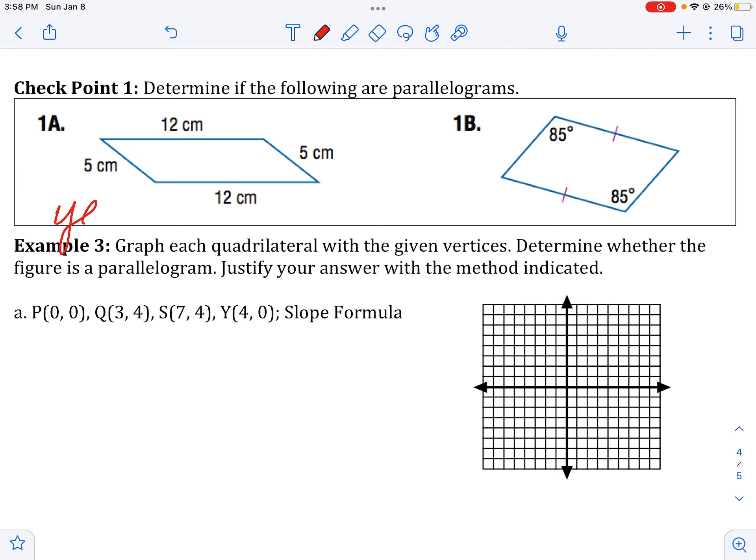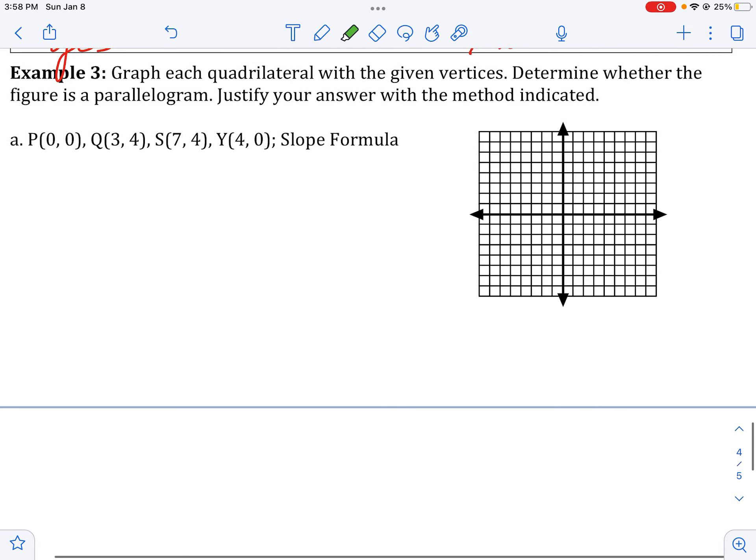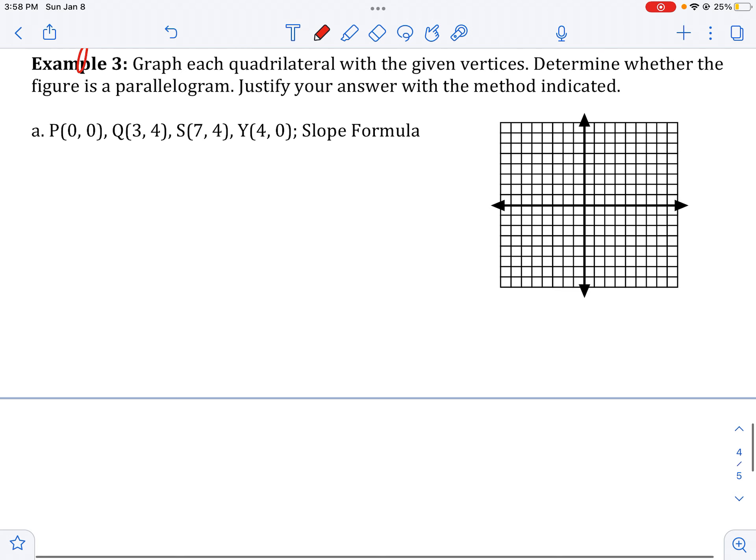On 1A, it should be yes, it is a parallelogram because both pairs of opposite sides are congruent. And on 1B, not necessarily a parallelogram because I only have one pair of opposite angles, I only have one pair of opposite sides. That doesn't tell me necessarily that these sides and angles fit the definitions or the properties or the theorems.